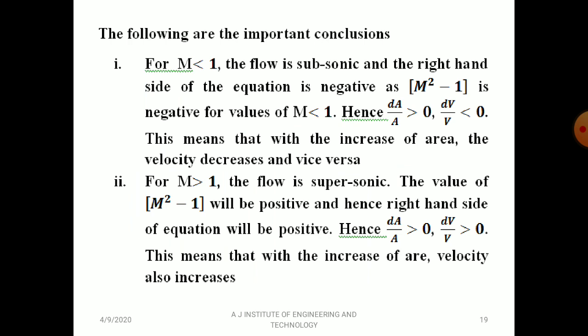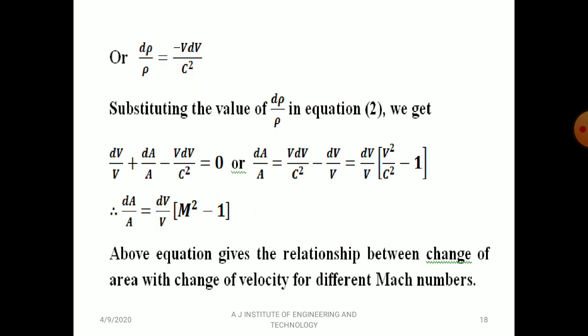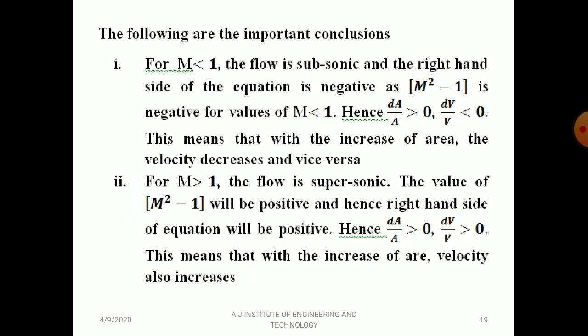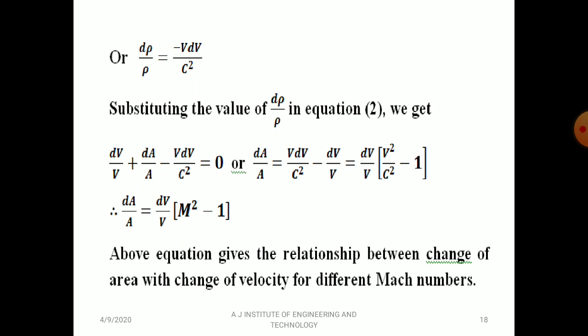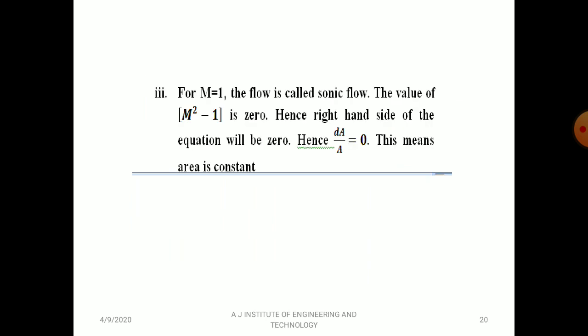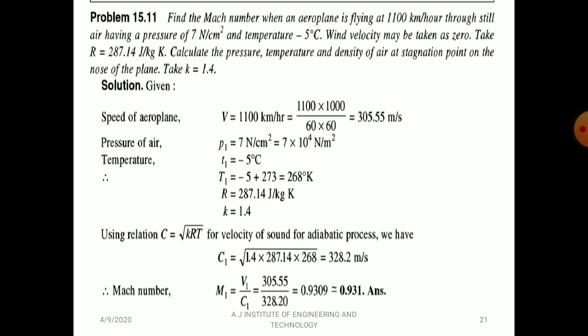For M > 1 (supersonic flow), dA/A > 0 and dV/V > 0, meaning with the increase of velocity, area also increases. For M = 1 (sonic flow), applying M = 1 gives dA/A = (dV/V)·(1 − 1) = 0, which means dA = 0, so the area is constant.